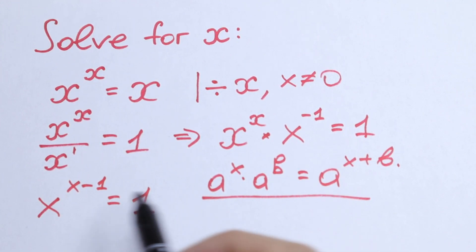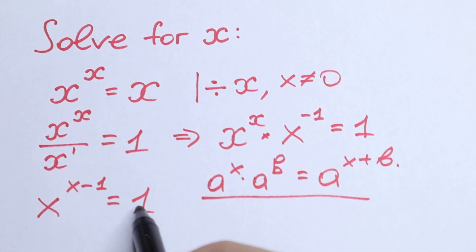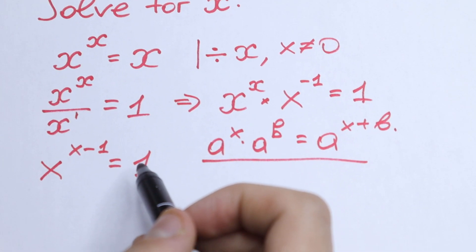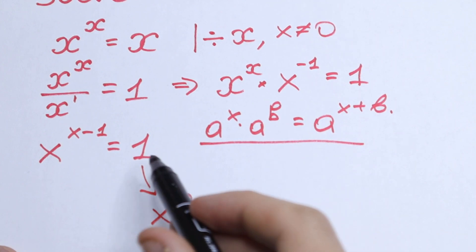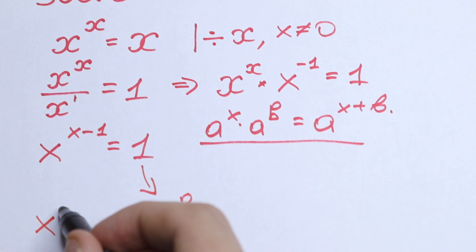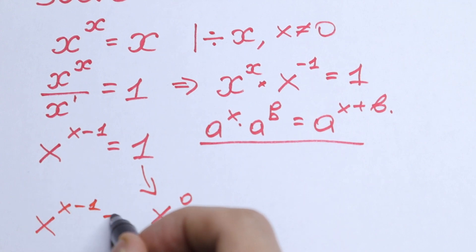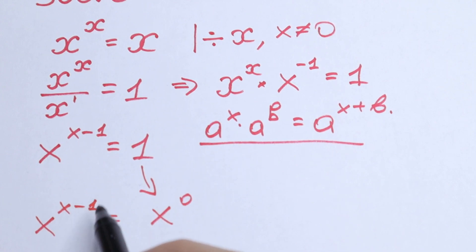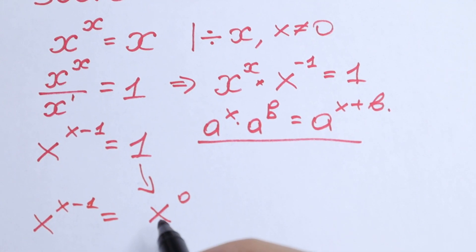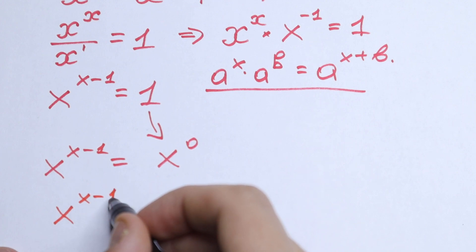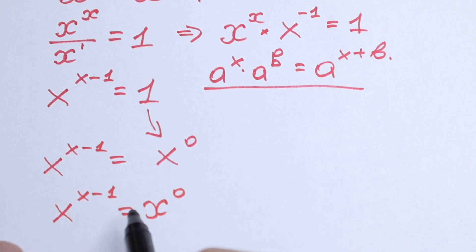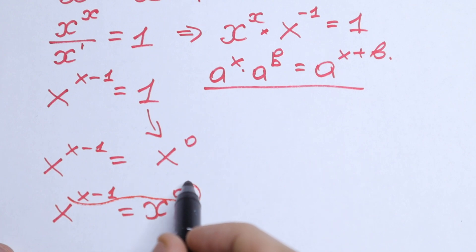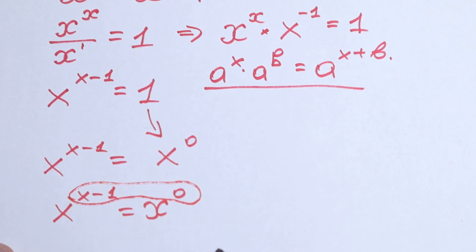What are we going to do next? Take a look — we have x on the left with a power, and 1 on the right. We can write 1 as x to the 0 power. So our equation becomes x to the power x minus 1 equal to x to the 0 power. Since the bases are the same, we write x minus 1 equal to 0.